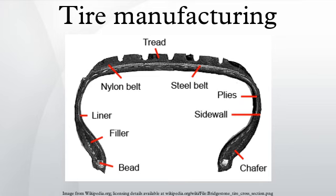Natural rubber, or polyisoprene, is the basic elastomer used in tire making. Styrene-butadiene copolymer is a synthetic rubber which is often substituted in part for natural rubber based on comparative raw materials cost. Polybutadiene is used in combination with other rubbers because of its low heat buildup properties. Halobutyl rubber is used for the tubeless inner liner compounds because of its low air permeability.